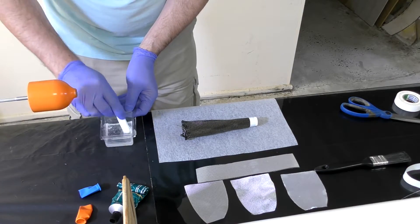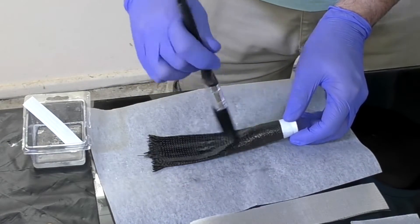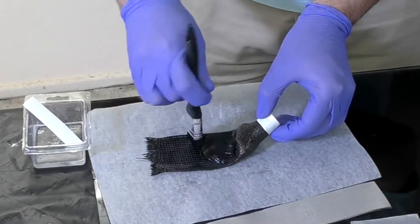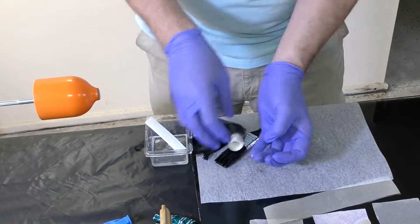Now we completely saturate the sleeve with epoxy. We're using a brush for this rather than a roller. When it's ready, we slide it over the balloon.